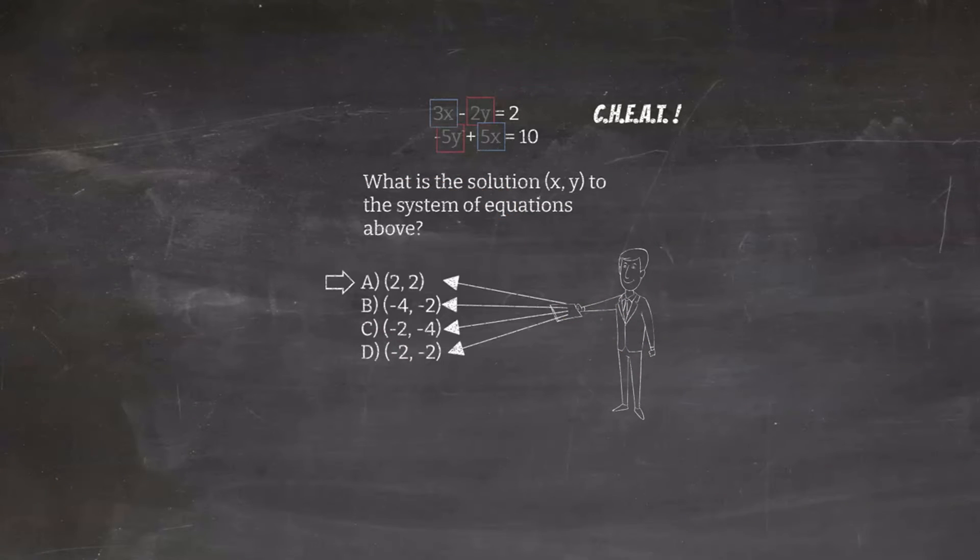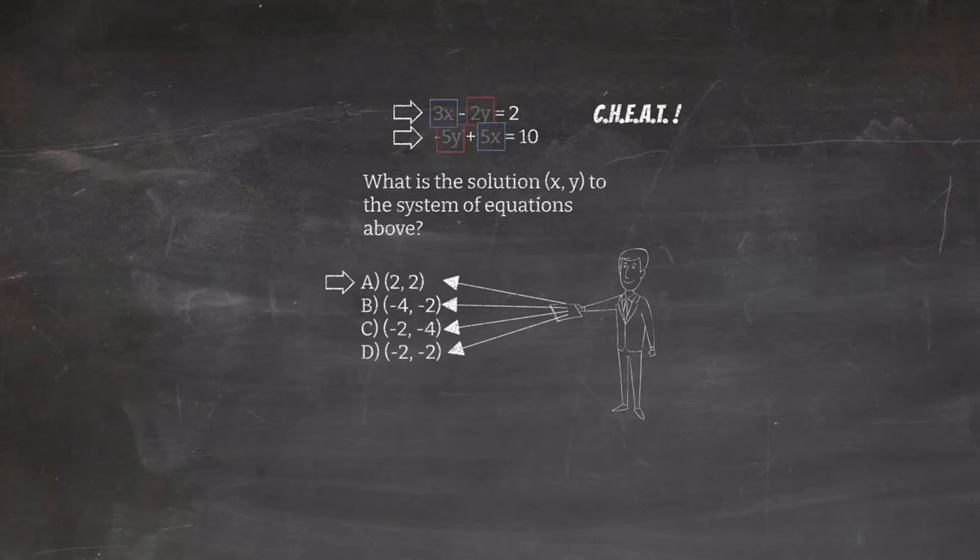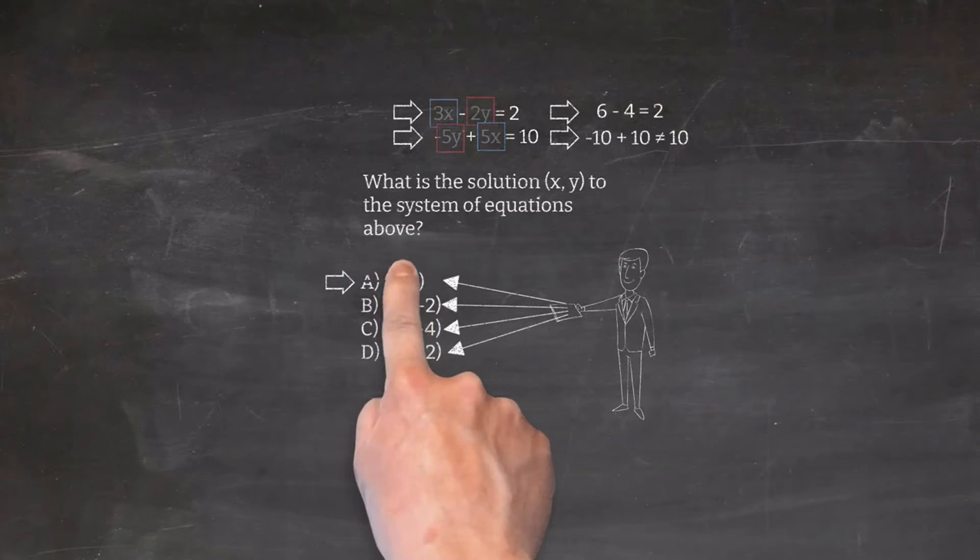Let's go plug in 2 comma 2 for the X and Y values and see if that works. If it does work for both lines, then that's the answer. We notice that 2, 2 works for the first line, but it doesn't work for the second. So that is not a solution because it has to work for both.